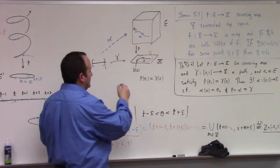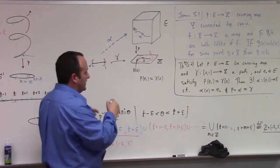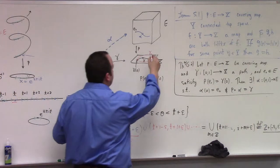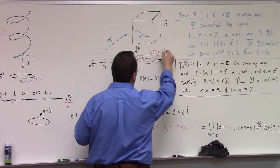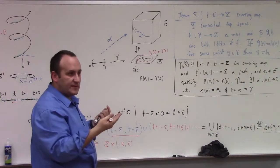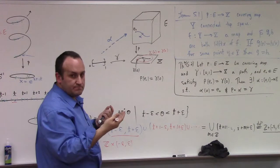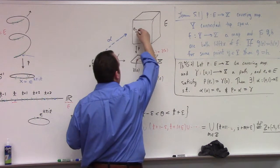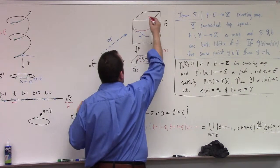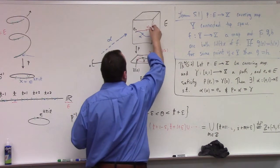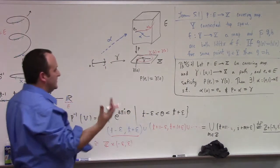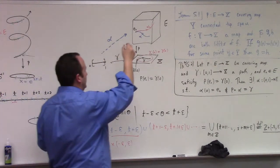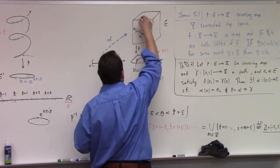Let me draw it in a different color. The path in the base space, in the X, the space which is being covered X, could be a loop. Call it γ₂, starting at γ₂(0) being equal to γ just for the sake of discussion. When you lift that loop you don't necessarily get a loop - that's the thing.